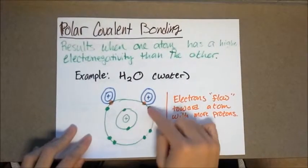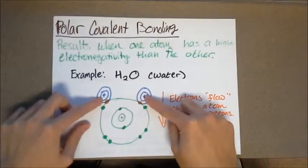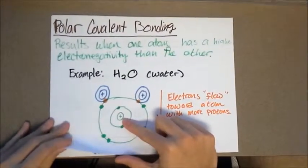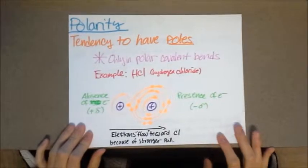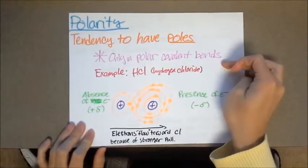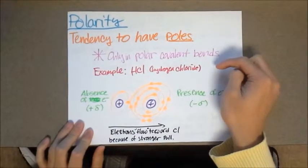So what's going to happen is that these two electrons from these two hydrogen atoms are going to flow toward this oxygen atom. Polarity is a tendency to have poles. These generally only occur in polar covalent bonds.